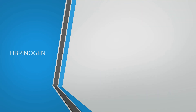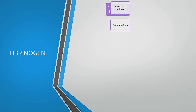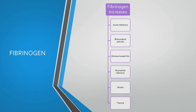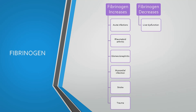These are the conditions where fibrinogen increases: acute infections, rheumatoid arthritis, glomerulonephritis, myocardial infarction, stroke, and trauma. These are the conditions where fibrinogen decreases: liver dysfunction, use of anabolic steroids, and use of phenobarbital.